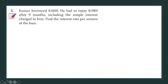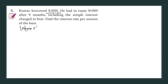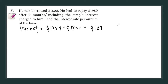Let's start with question 5, a level two simple interest question. The principal amount is $1,800 — that's what he borrowed. After that he has to repay $1,989 after nine months. So first of all, the interest he has accumulated is $1,989 minus $1,800, which equals $189.